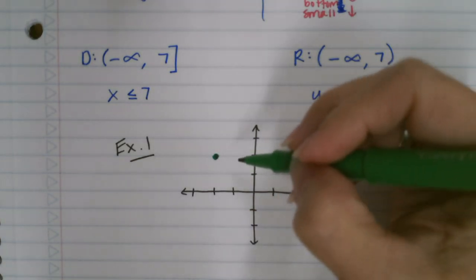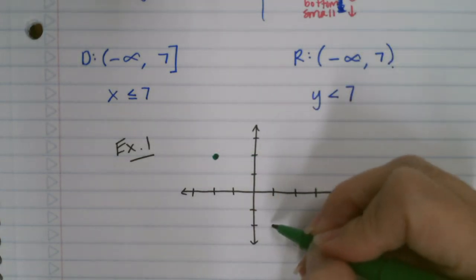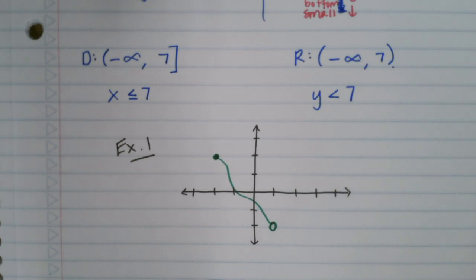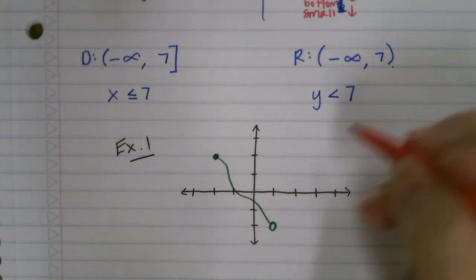So I'm going to make a solid dot right there, and then I'm going to go to an open dot right there. And I'm just going to kind of wave it a little bit there.